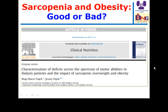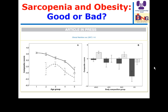We don't want sarcopenia — reduction in muscle mass — and we don't want fat expansion or obesity, because both are associated with limitation of physical activity. In the chart comparing controls (gray) to patients (black), the scenarios of no sarcopenia/no obesity, no sarcopenia/obesity, sarcopenia/no obesity, and sarcopenia with obesity show marked reduction in physical activity when both factors are present.